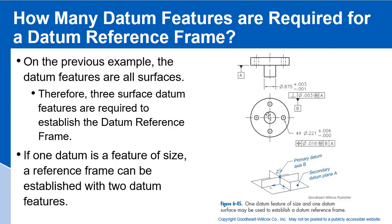This cylindrical datum B establishes an axis. That axis — essentially the Z-axis — establishes our X and Y planes coming through there. That gives us our mutually perpendicular plane, and then datum A gives us a complete datum reference with only two datums.